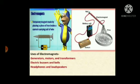Electromagnet. A temporary magnet made by placing a piece of iron inside a current-carrying coil of wire is known as an electromagnet. Uses of electromagnets include: generators, motors, transformers, electric buzzers and bells, headphones, and loudspeakers.